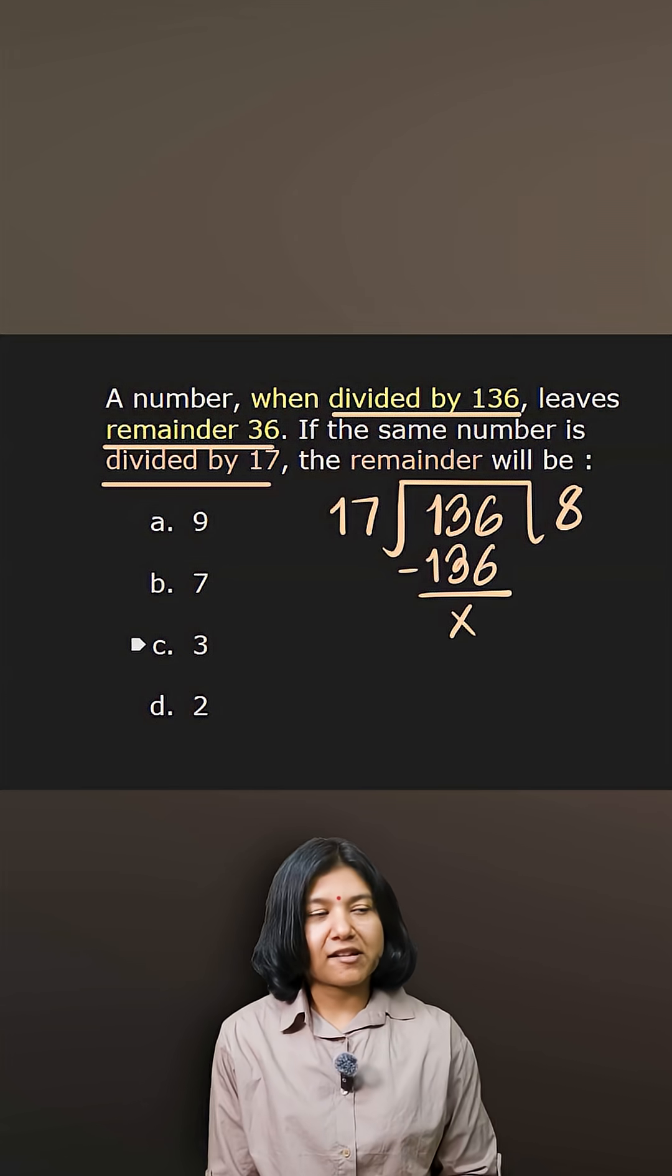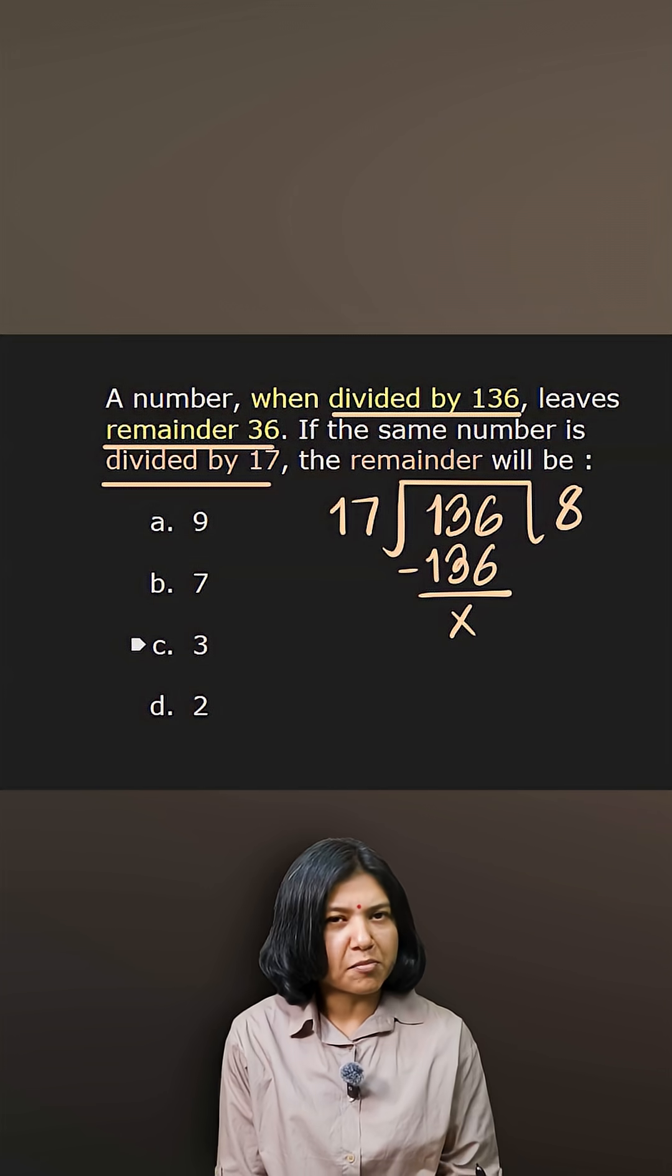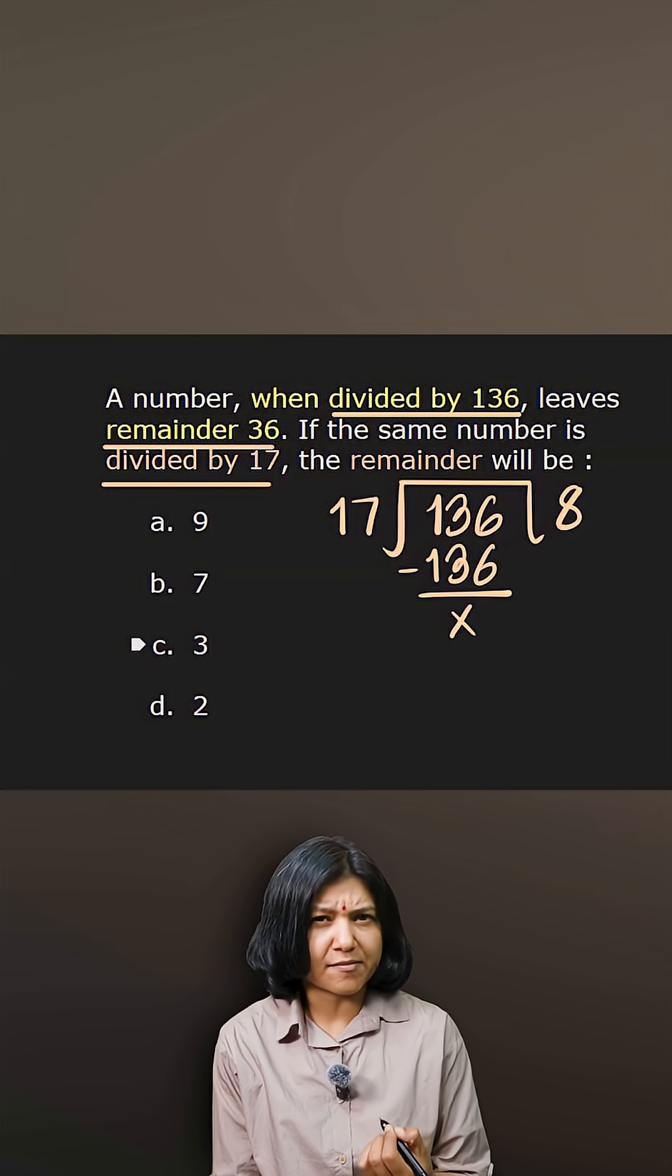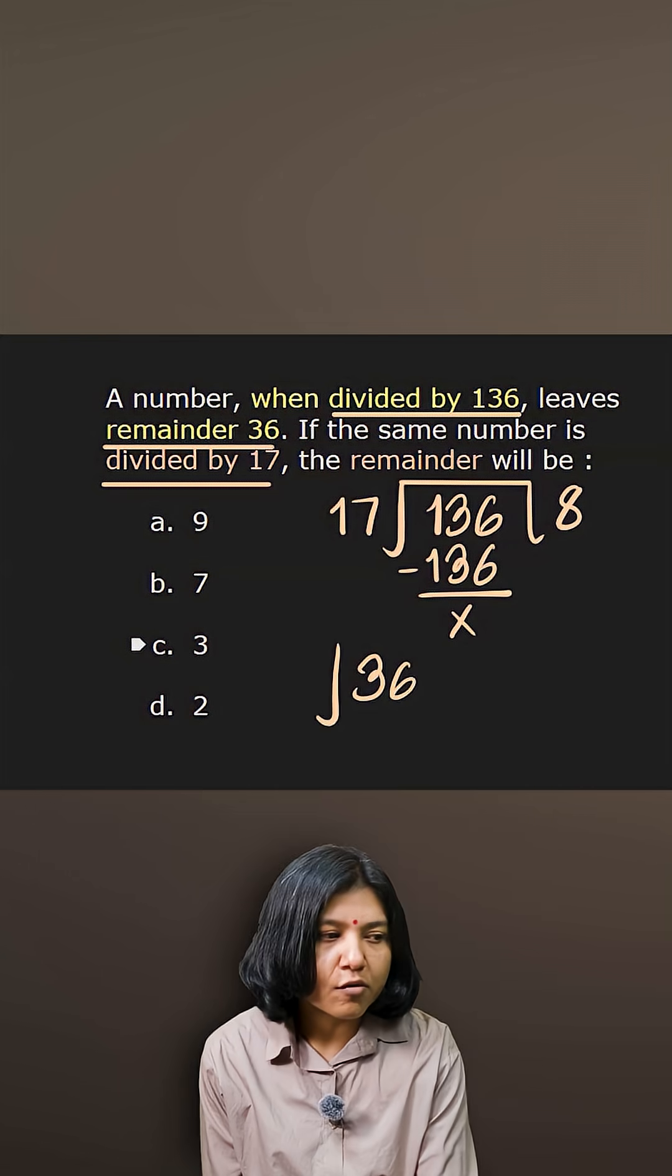So the logic is 136 leaves the remainder 36, and 17 should also leave the same remainder. But here the remainder has been greater than 17, so in that case you'll take the original remainder you got and you want to remove the multiple of 17 from that number.